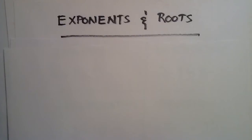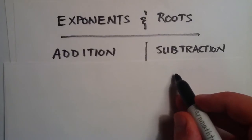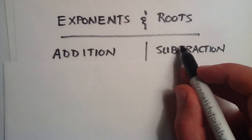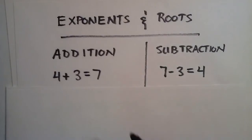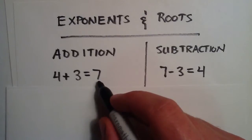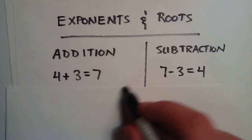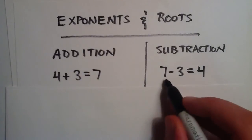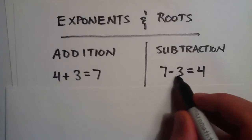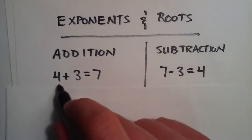Before we jump right into exponents and roots, I want to discuss something we all know a little bit about: addition and subtraction. You'll find that the relationship between addition and subtraction is really the same as the relationship between exponents and roots. So let's say you start with the number 4 and you add the number 3 to it — you end up with the number 7. Now, what if we started with the number 7 and wanted to make our way back to the 4? Well, subtraction does the job for us. 7, and then instead of adding 3, we take away 3, and it brings us back to the 4 that we started with.